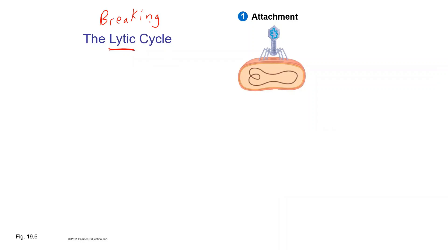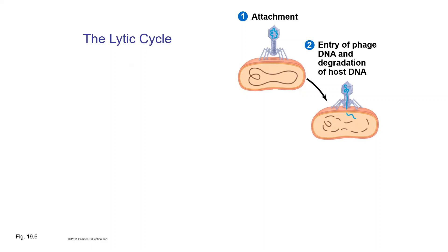The first step is attachment. Here's E. coli — it has carbohydrates on the outside of its cell. The protein tail fibers on the virus are recognizing something specific to E. coli, some sort of carbohydrate, and they bind. After they attach, they are going to inject their DNA into the host cell. The bacteriophage actually have an enzyme called lysozyme that will digest the cell wall of the bacteria and allow the DNA in.